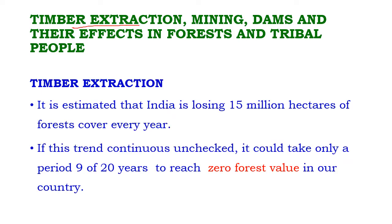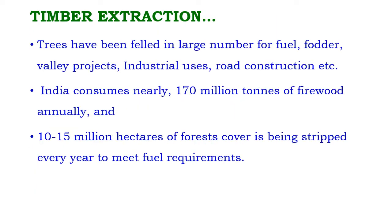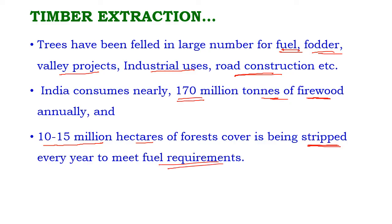Timber extraction, mining, and dams — effects on forests and tribal people. Timber extraction: it is estimated that India is losing 1.5 million hectares of forest cover every year, and if this trend continues unchecked, it could take only 9 to 20 years to reach zero forest value. Trees are felled in large numbers for fuel, fodder, value projects, industrial uses, and construction of roads. India consumes nearly 170 million tons of firewood annually, and 10 to 15 million hectares of forest cover is stripped every year to meet fuel requirements.